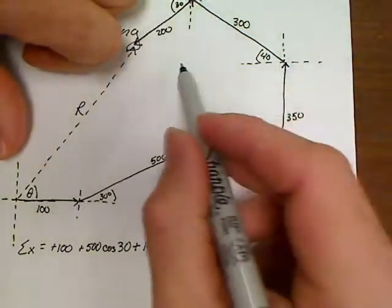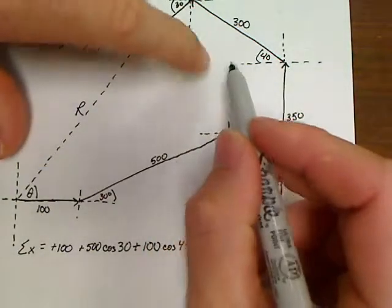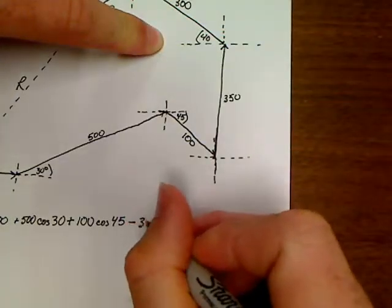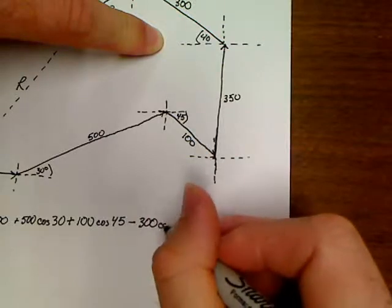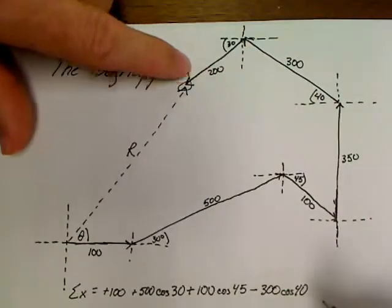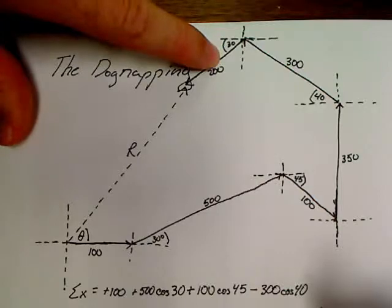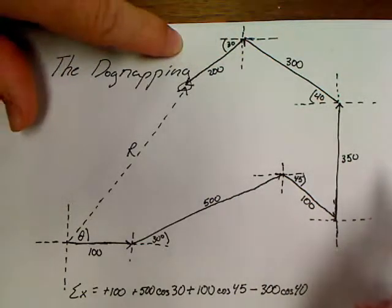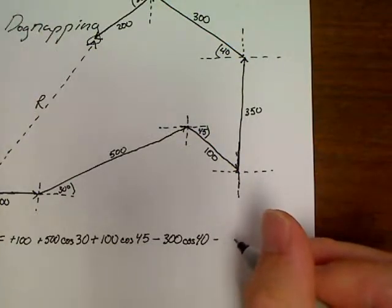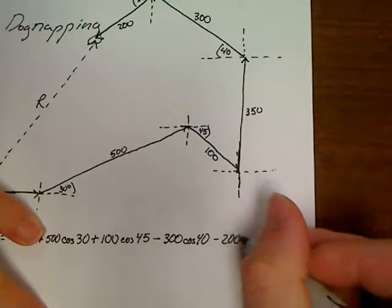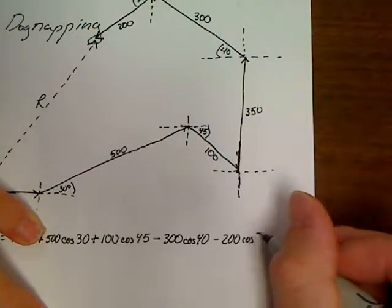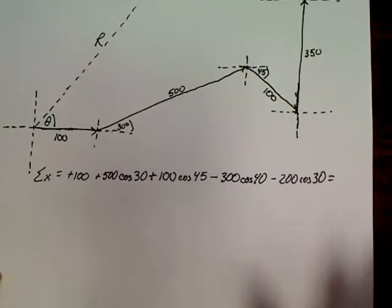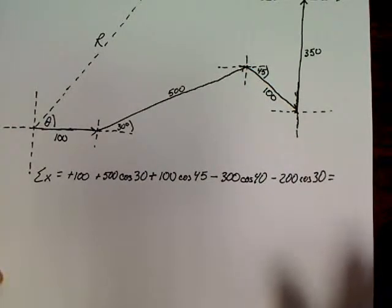Next vector is this 350 north, which has no x component. Now this 300 has a negative x component. So we're going to write minus 300 cosine 40. So minus 300 cosine 40. And then the last vector here, this 200, it also is a negative x component. So minus 200 cosine 30. And sorry if my writing has got a little small in this one, but it's because I wouldn't have a lot of room. Alright.